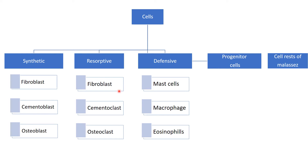So similarly we have fibroblast, cementoblast, osteoblast. In the defensive category, cells belong to the vascular compartment — that is the mast cells, macrophages, and eosinophils. Then we have the progenitor cells, also called the undifferentiated mesenchymal cells. Then we have the cell rests. These all come under the cells category.